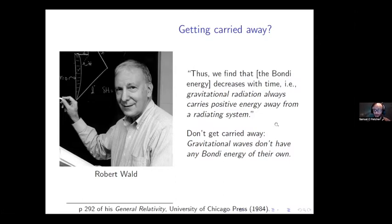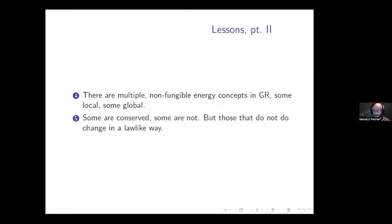The second set of lessons from gravitational waves is that there are multiple non-fungible energy concepts in GR — types of energy not exchangeable with one another. Some are local and some are global, and all have important theoretical roles, but those roles differ. These are roles that energy concepts more or less share in Newtonian applications but come apart in general relativity. Some of these notions are conserved and some are not — the Bondi energy is in general not conserved when we have gravitational radiation, but those that do not conserve do change in a law-like way, with a perfectly precise explanation for why and how they change.